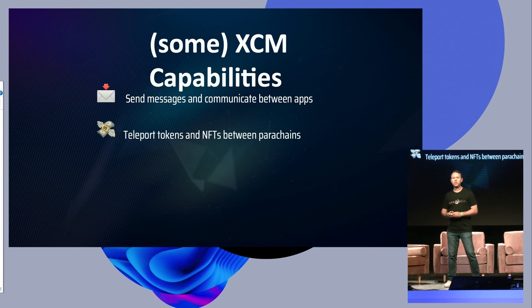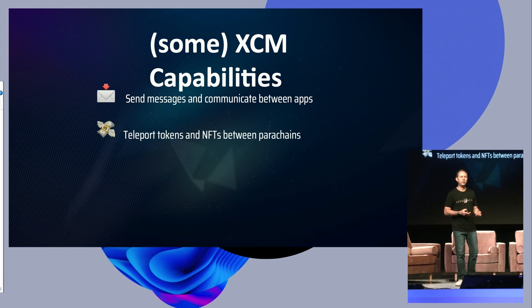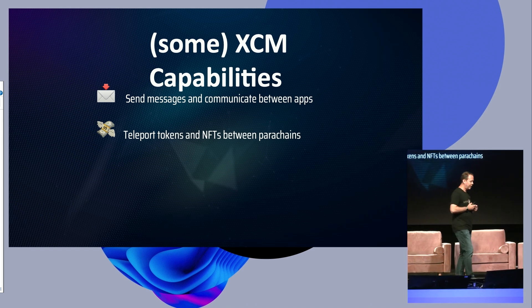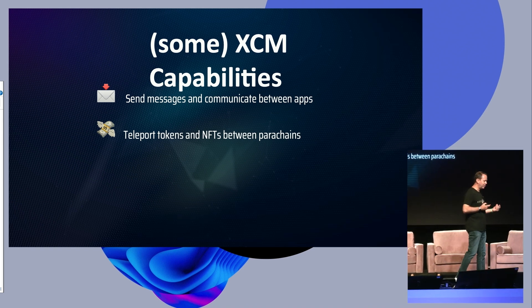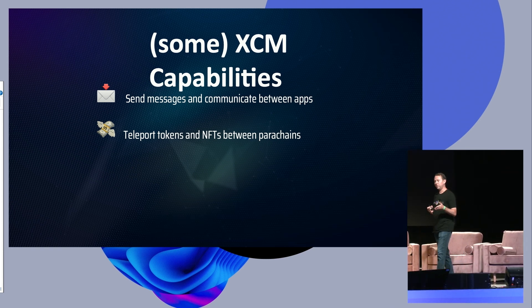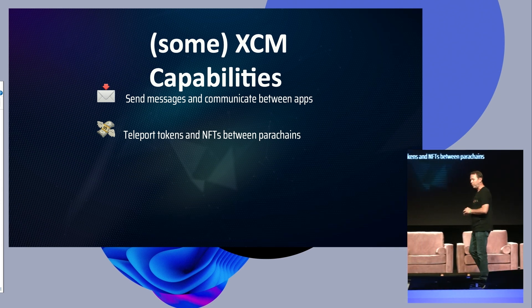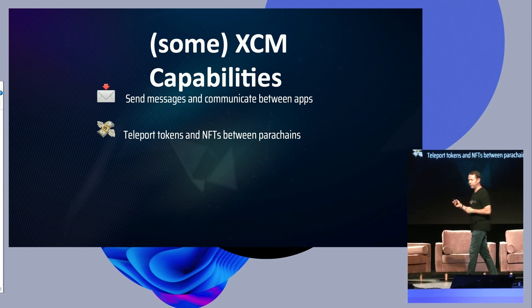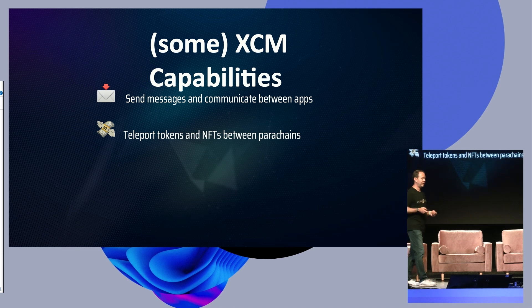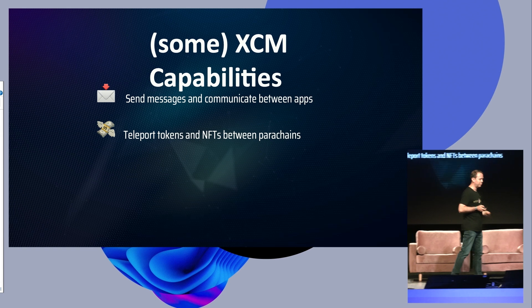We can actually teleport tokens and NFTs between parachains — something we've never been able to do before. This is why these messages need to be secure: we're actually teleporting value. We can say, I want to send 20 tokens of this type from one parachain to another, or send this NFT from one parachain to another. It needs to be extremely secure. The beauty of this is that the relay chain gives us that security. That strong shared security vision is what drew us to Polkadot.